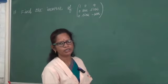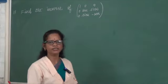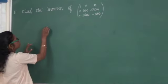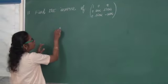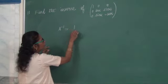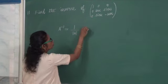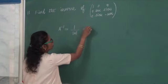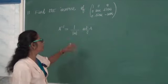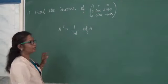Shri Gurubhiyo Namaka student. I have discussed how to find A inverse in a 3 by 3 matrix. First, A inverse — what is the formula? A inverse equal to 1 by determinant A into adjoint A. First I am going to find determinant A.